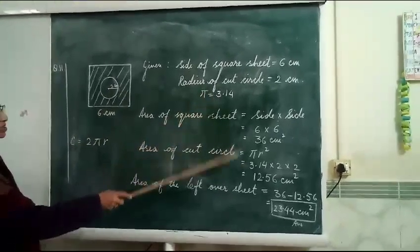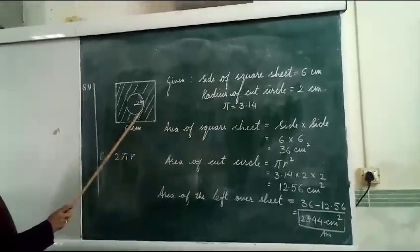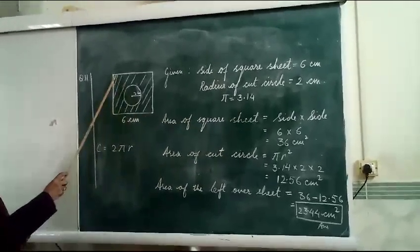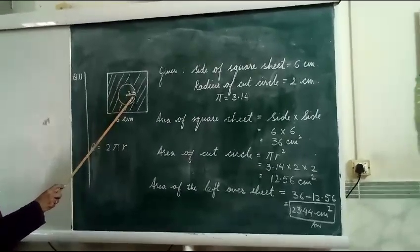Pi r square, value of pi is given 3.14, then you put the values in the formula. In that way you know the area of the square sheet and the area of the circle.